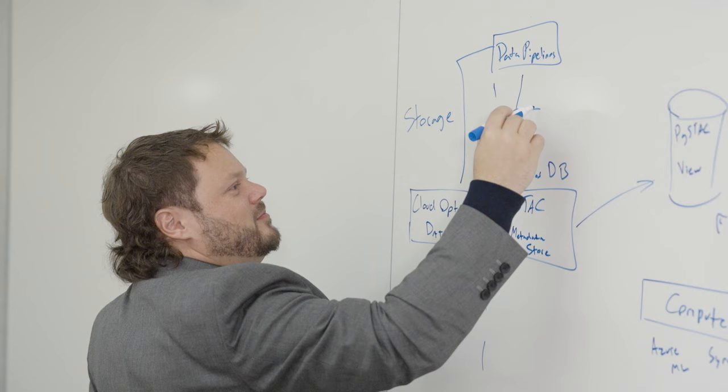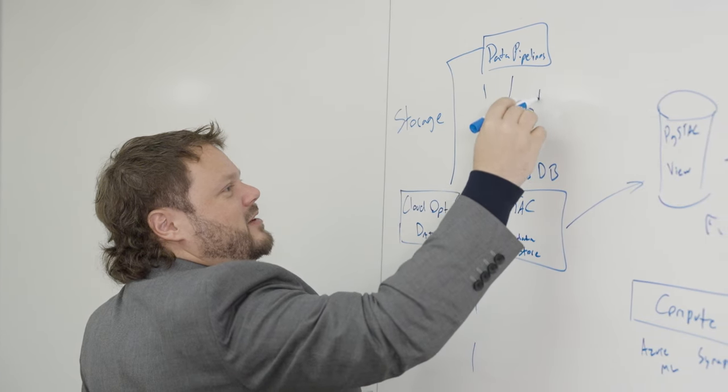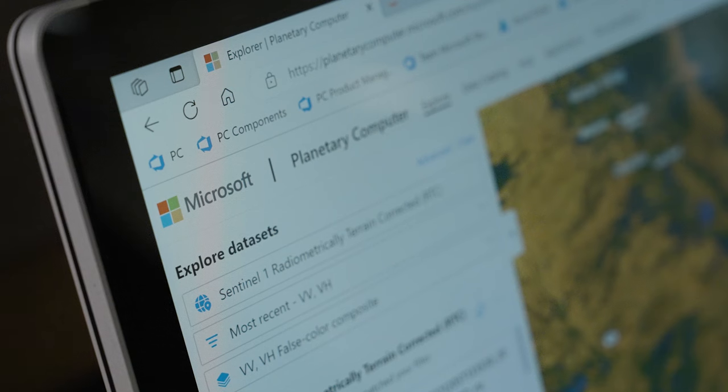The Planetary Computer has over 50 petabytes of data in cloud-optimized formats, coming from a wide range of sources — over 90 different data sources, including government agencies like NASA and the European Space Agency, along with derived data products from companies like Impact Observatory. We're growing that catalog and working with users to bring even more datasets, formats, and services into the Planetary Computer.